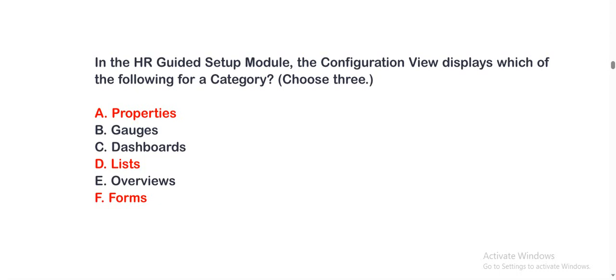The options are: option A, Properties; option B, Gauges; option C, Dashboards; option D, Lists; option E, Overviews; and option F, Forms. The correct options are option A, B, and F.